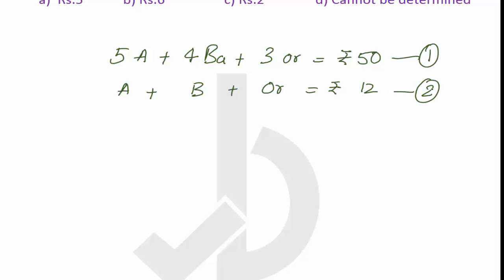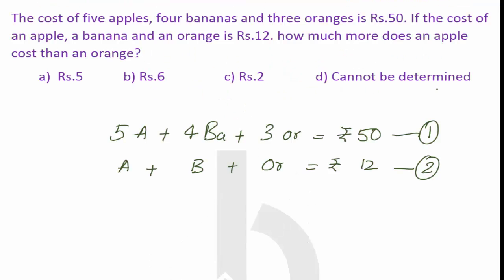So we cannot solve each value of a banana, apple and an orange. But according to the question, what he asked is the relationship between apple and orange. So I am going to keep apple and orange and I will just try to remove the bananas from here.